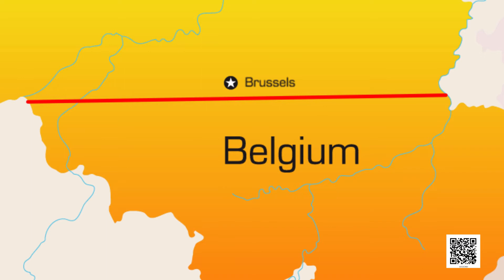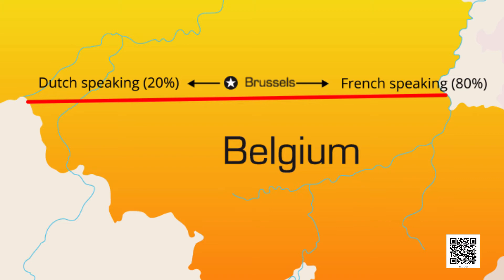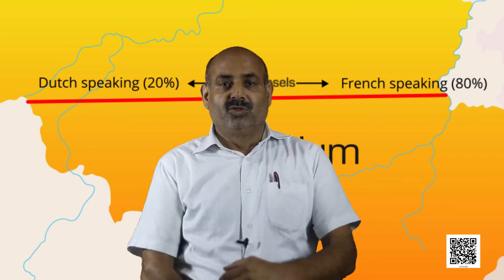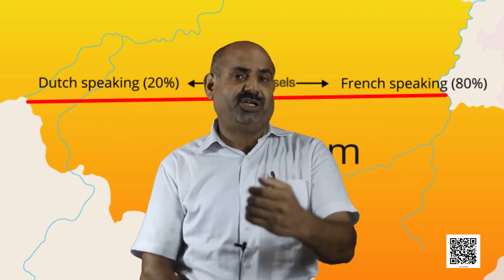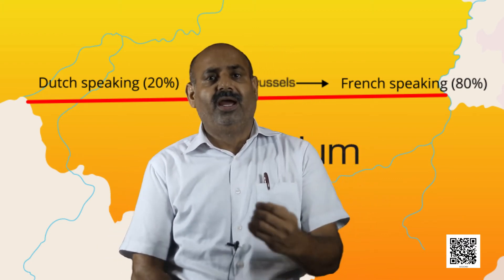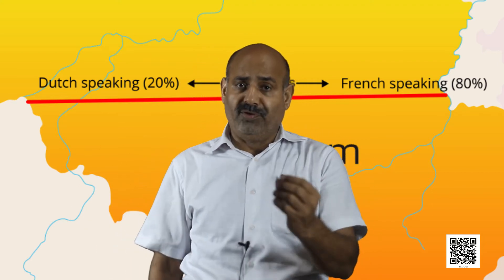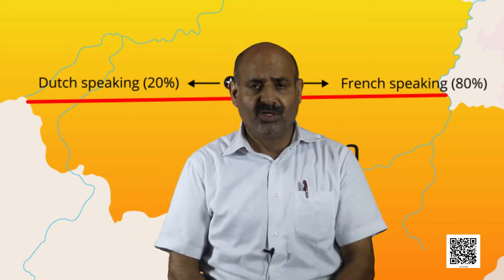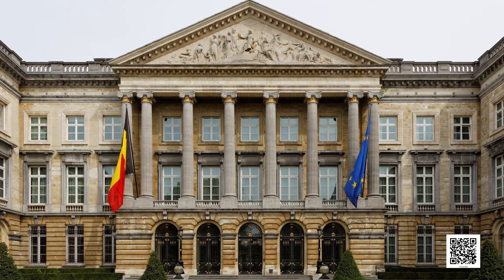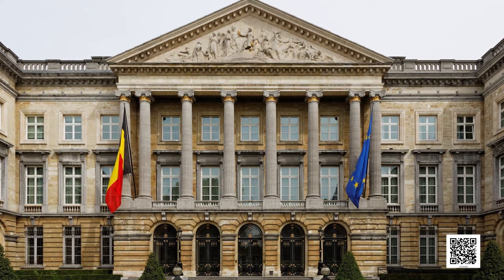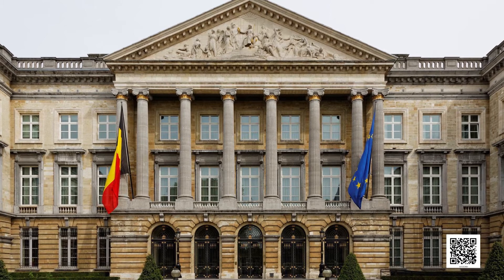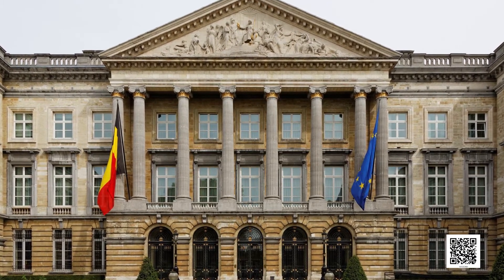There is also the capital city Brussels in Belgium, where the structure of the population is totally different. Here 80% of people speak French and 20% speak Dutch. So there was a complicated situation. In the 1950s and 1960s there was tension between these two communities.